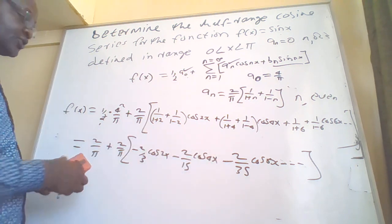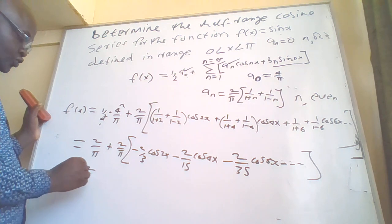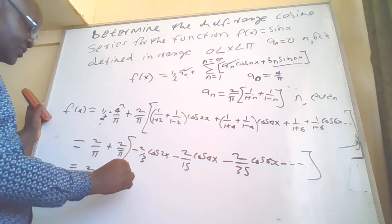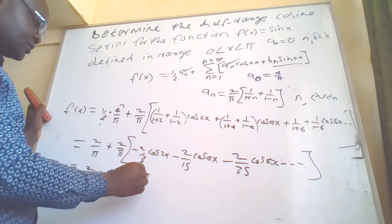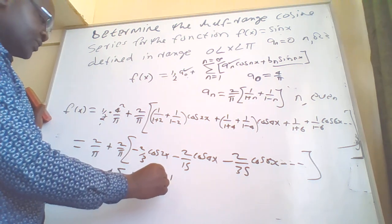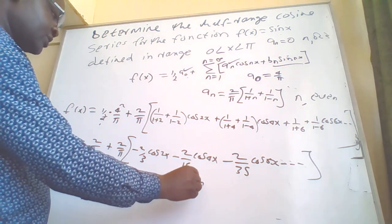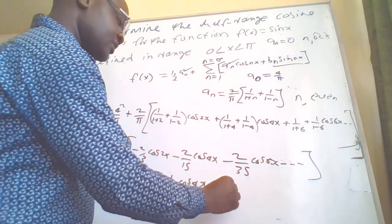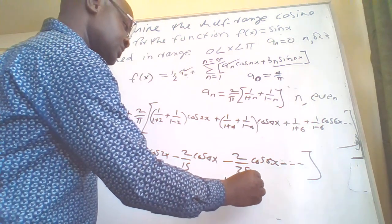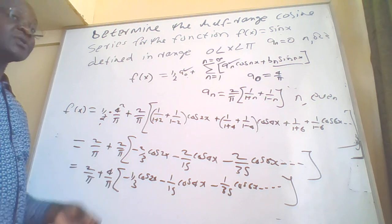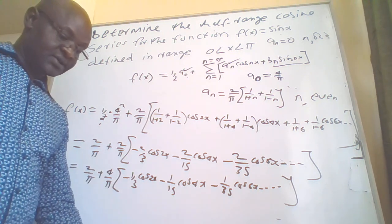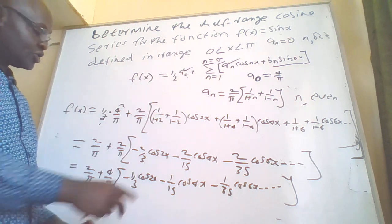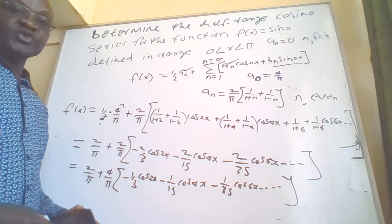Factoring out 2, the final half-range cosine series for f(x) = sin(x) is: f(x) = 2/π + (4/π)·[−(1/3)cos(2x) − (1/15)cos(4x) − (1/35)cos(6x) − ...]. That is the required Fourier series. The half-range cosine series of this function is this result. Thank you for watching and listening.